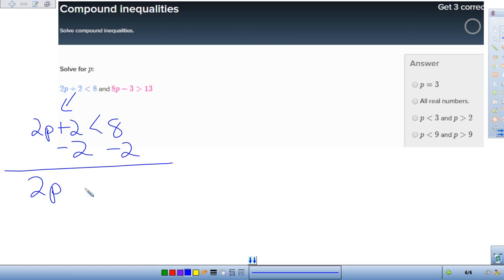So I'm going to take away 2 from both sides. It gives me 2p. These cancel, is less than 8 minus 2 is 6. Divide by 2. And I get p is less than 3. So there's one answer. p is less than 3.